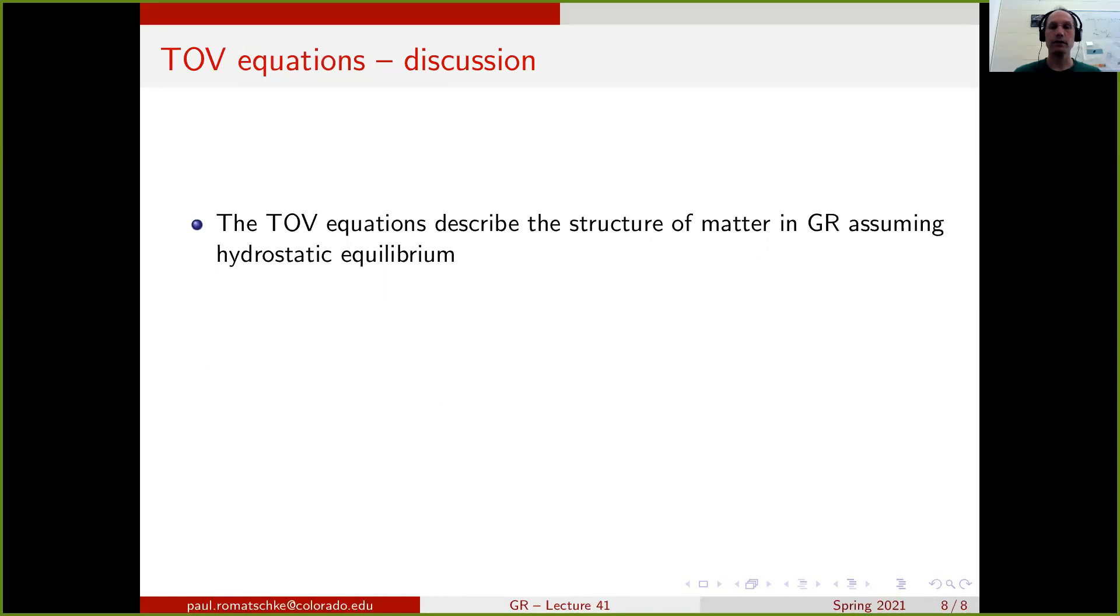The TOV equations describe the structure of matter in GR assuming hydrostatic equilibrium. And the structure of the stars will depend on the particular matter that we want to describe. In particular, they will be different if we want to describe ordinary stars, white dwarfs or neutron stars, because the equations are the same. It's just the equation of state that is different between these different objects.